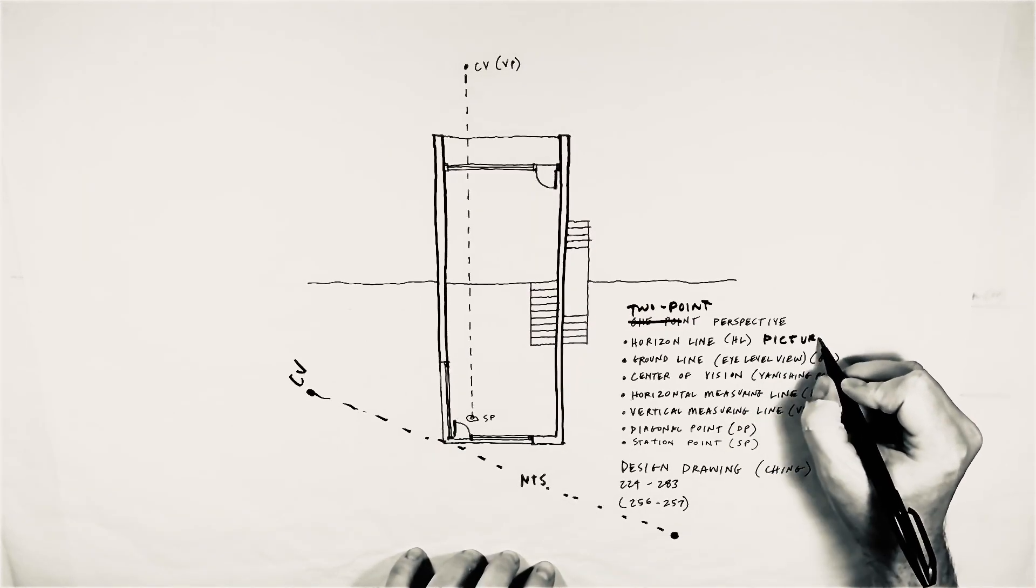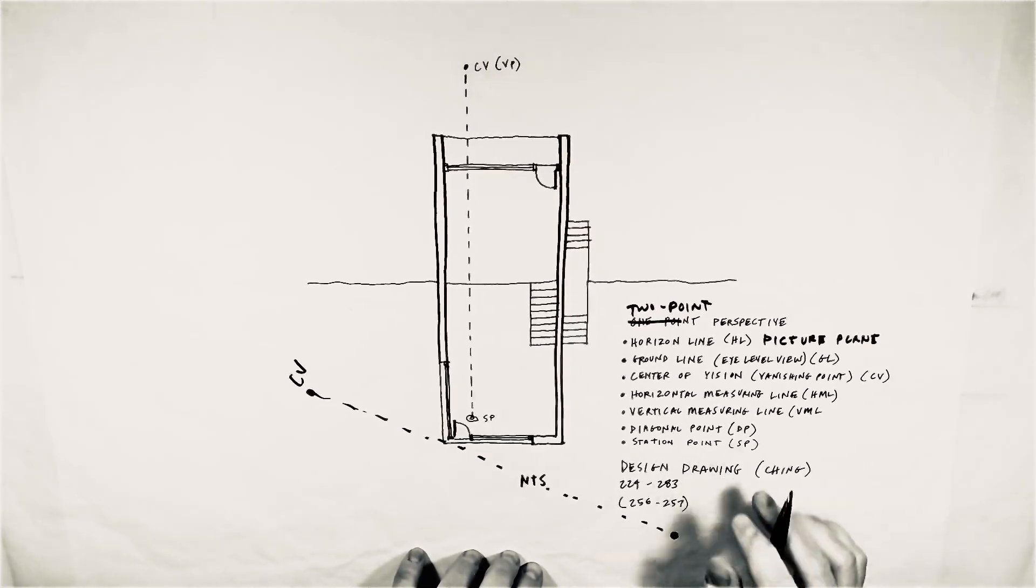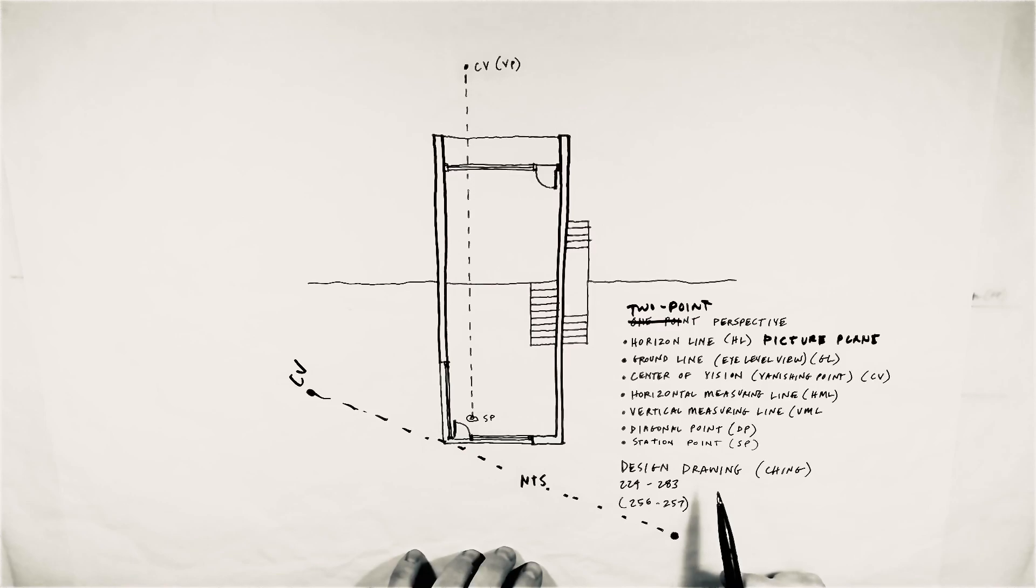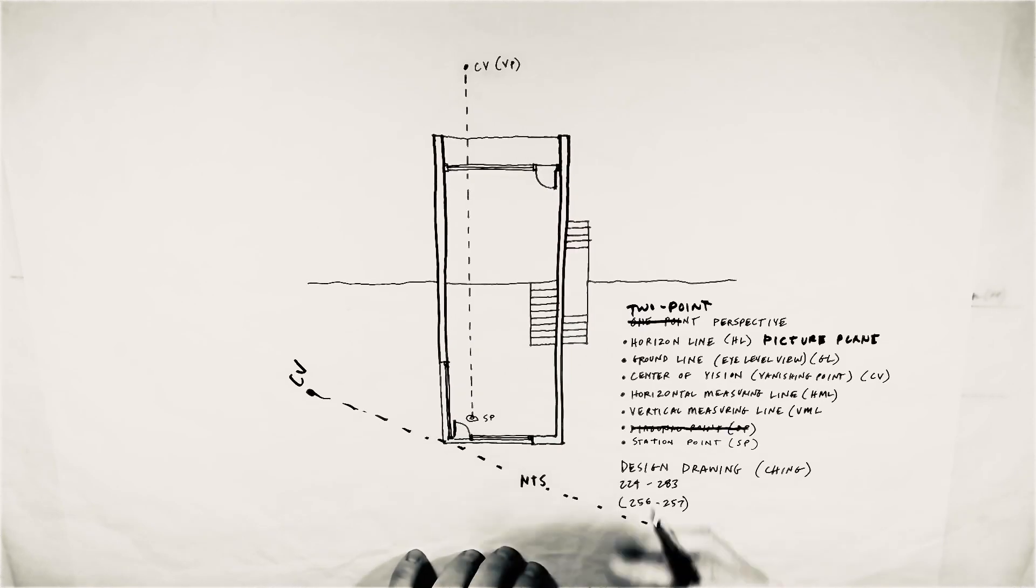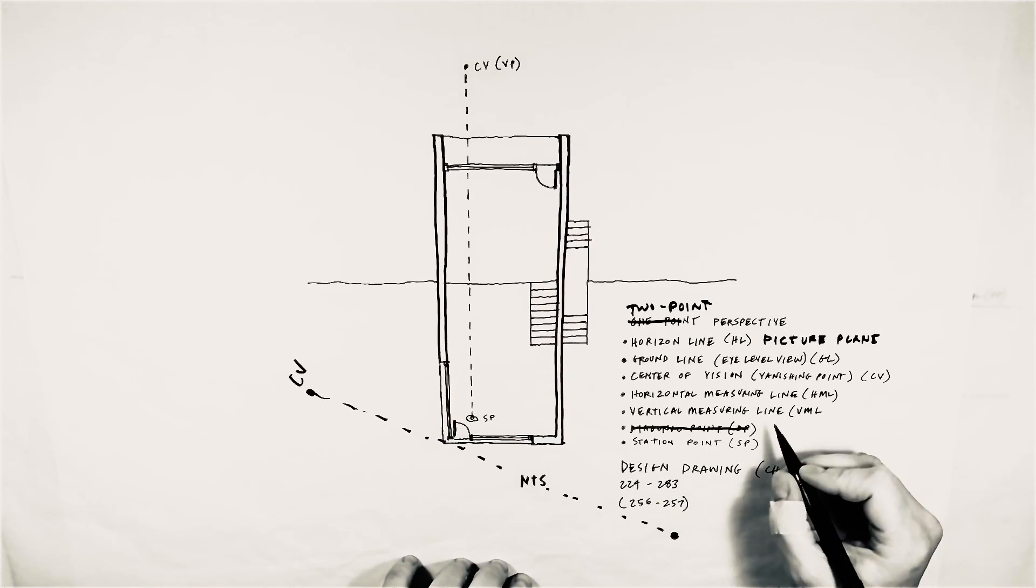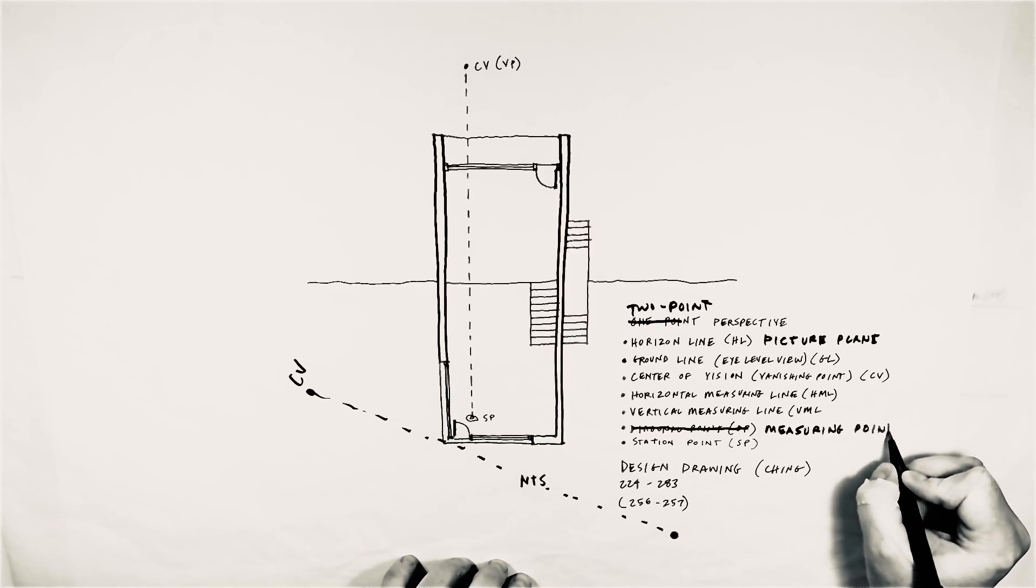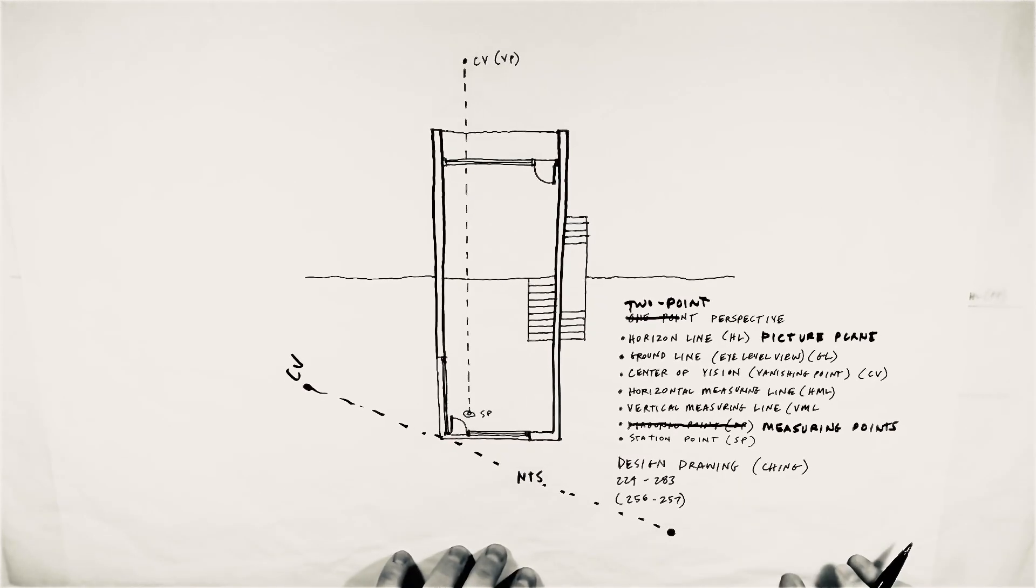But we're also going to talk about the picture plane, which essentially becomes the horizon line. Ground line again, center of vision, horizontal measuring line, vertical measuring line, those are still in point. We do not have a diagonal point, which we use in the one-point perspective. Because everything is at a diagonal here, we don't have any lines that are parallel to the horizon line. We're going to use another system, which I'll show you in this diagram coming up, where we use what we call measuring points.